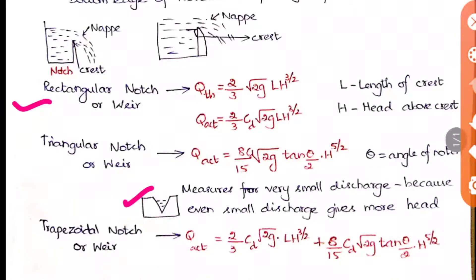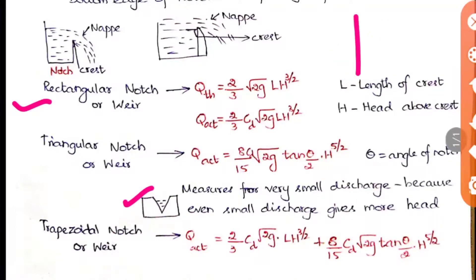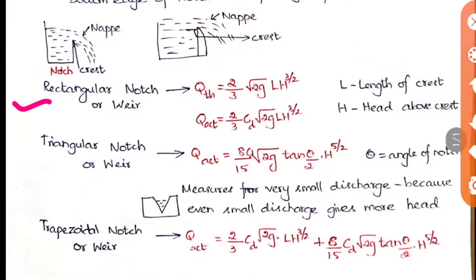The reason triangular notches are used for smaller quantities is that when there is a small amount of discharge, the head will be more because in a triangle the bottom portion narrows down, so the water level can be easily raised. Whereas in a rectangular or trapezoidal notch, there is a wide bottom, so the water level only rises a small amount. Therefore the triangular notch or weir is always preferably used when very minimum discharge is happening.